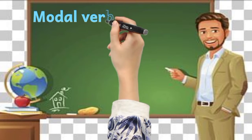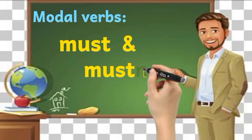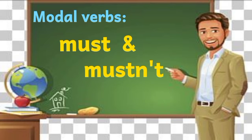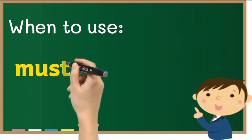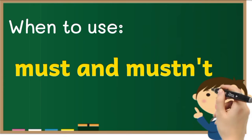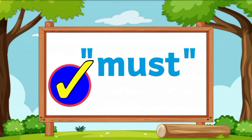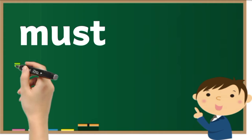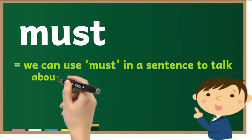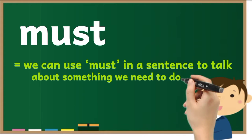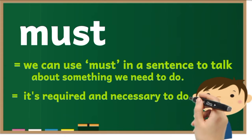We are going to learn about modal verbs: must and mustn't. Stay tuned for when to use must and mustn't. We can use 'must' in a sentence to talk about something we need to do — it's required and necessary to do.